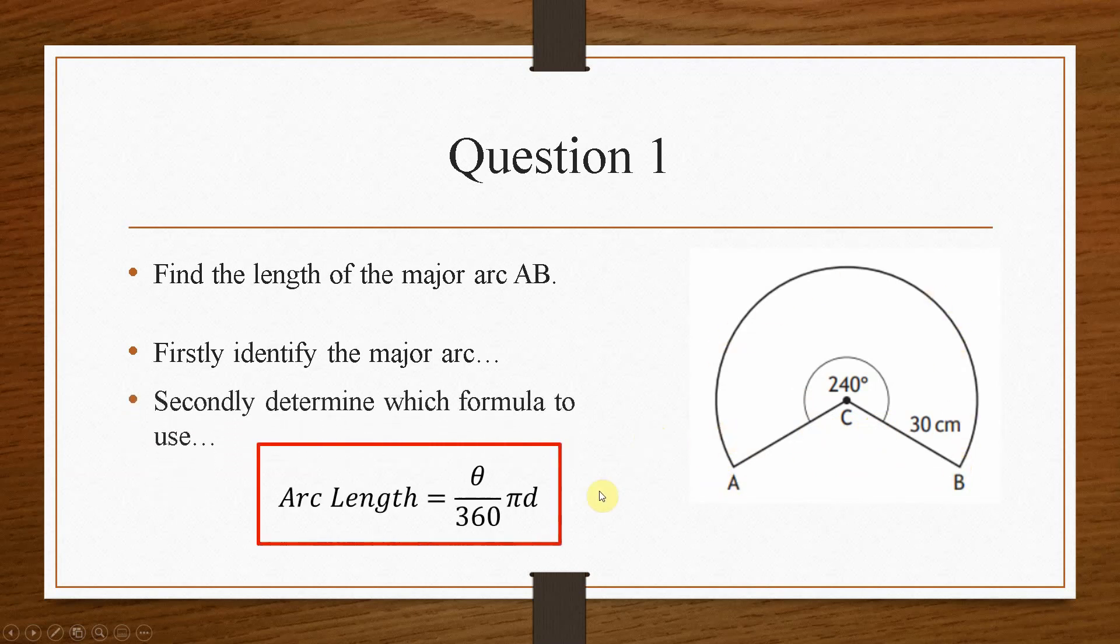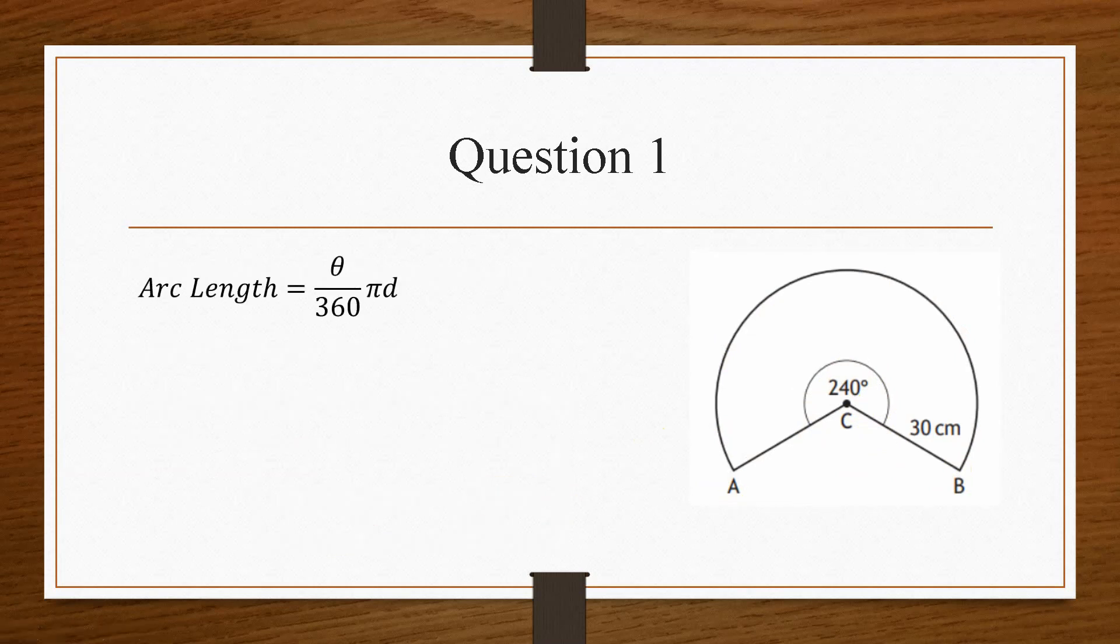And then we need to determine what formula we have to use. And in this case, we are given a specific angle. So we have to use the arc length formula. Now, once you've identified the formula, then the easiest thing to do is just write out the information that you are given. So the angle theta is 240 degrees,